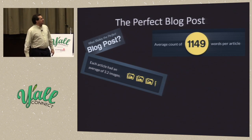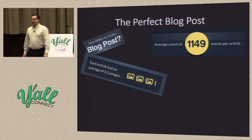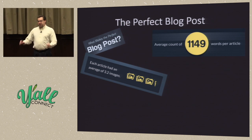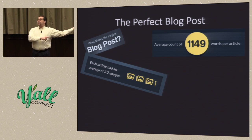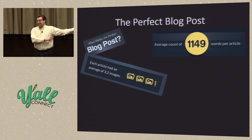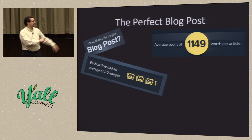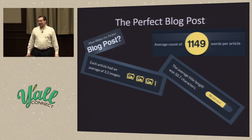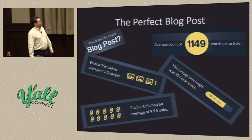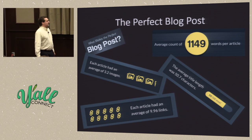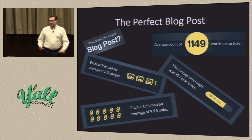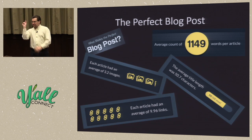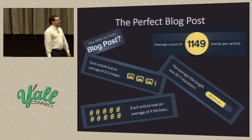The average count was 1,149 words per article, which jibes really well with the other one that said write more than 1,500. The average title length was 50.7 characters. Each article had an average of 9.96 links — I guess that means you have 10 links, but you go back and erase the last character off one of them so it breaks.